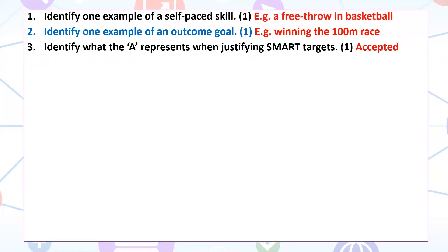What does the A represent in the SMART target? This has got mixed up in different contexts, but for us in GCSE PE the A is 'Accepted.' It needs to be accepted by the performer, and if they have a coach, it's accepted by them also.